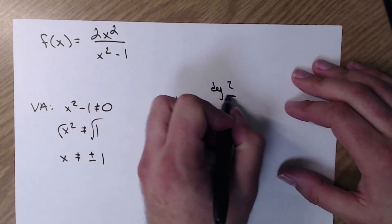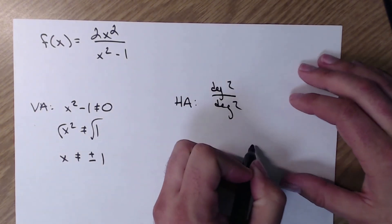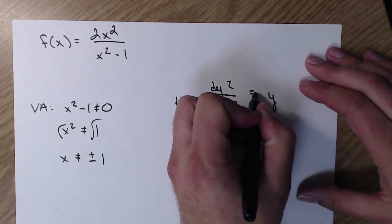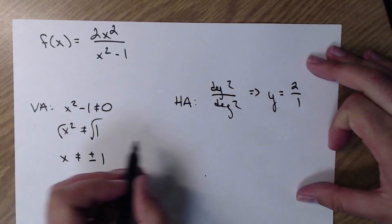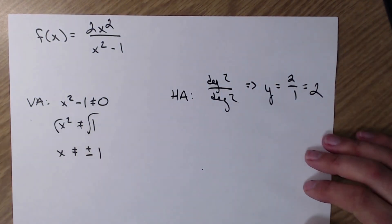Horizontal asymptotes. The degree top is 2. The degree bottom is 2. So that means I'm looking at y equals my leading coefficients. 2 over 1. Awesome. Just found them.